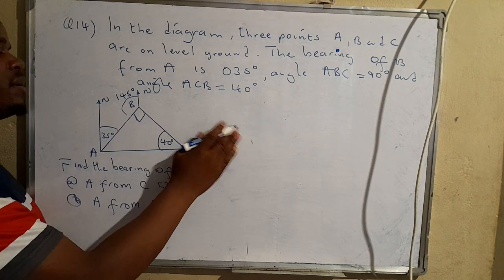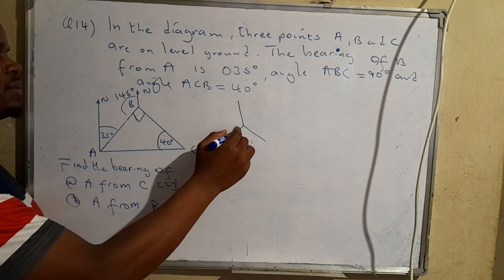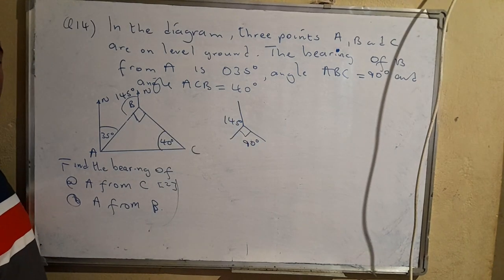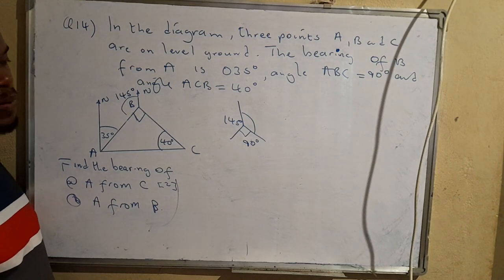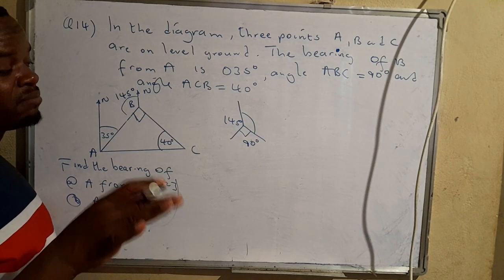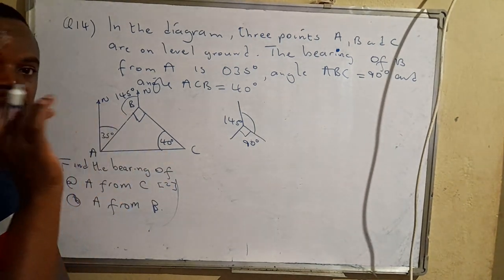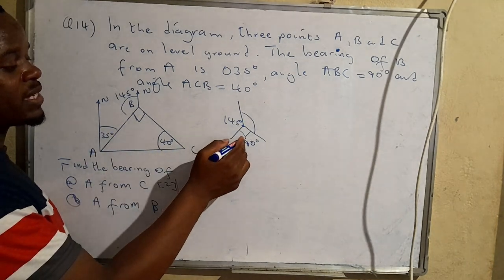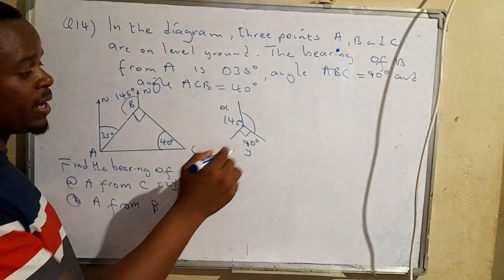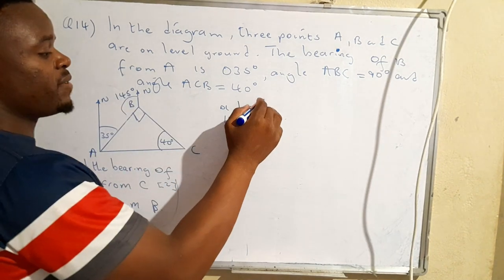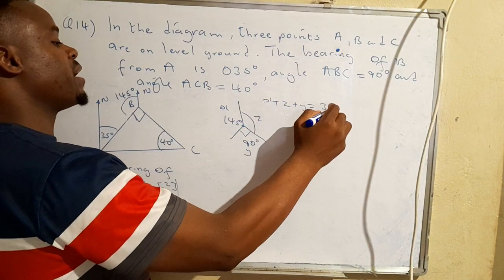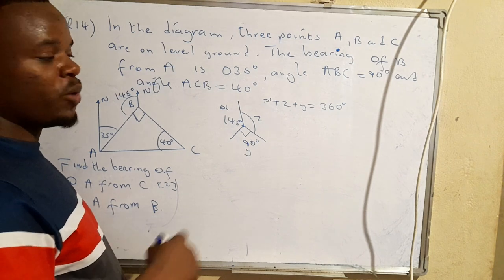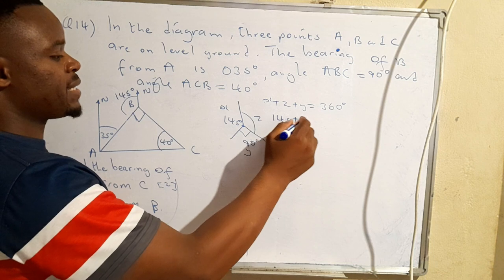We've determined this angle as 145°. The question now is: what is this remaining angle? If you have the fundamentals of bearings — which are angles — you'll know that angles at a point add up to 360°. So if we name the angles x, y, and z, then x plus z plus y should give us 360°. We say 145° plus 90° plus z should sum up to 360°.